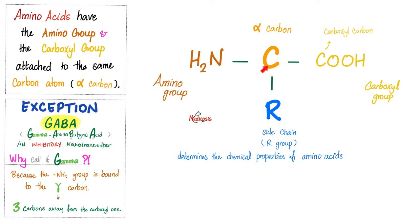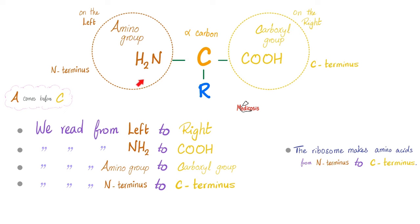This is the alpha carbon, unless you're GABA, where your amino group is bound to the gamma carbon. That's why we call it GABA, because it stands for gamma amino butyric acid, as we have discussed in previous videos in this biochemistry playlist. And when I say that you start with the amino and then you follow it by the acid, this is not an arbitrary order.